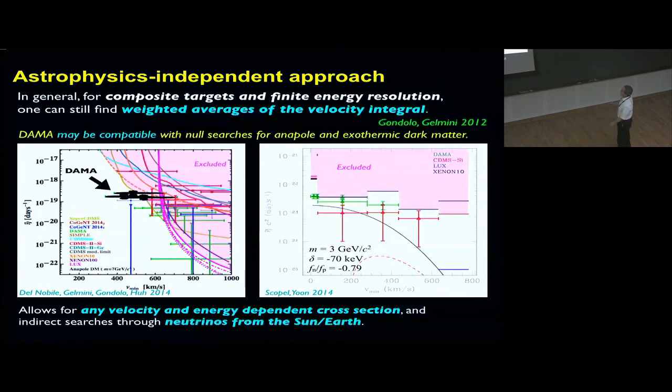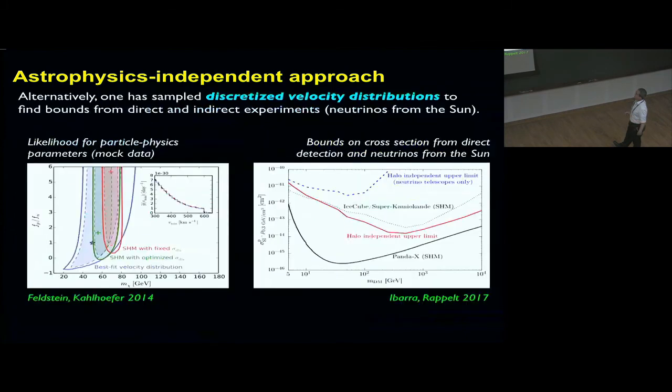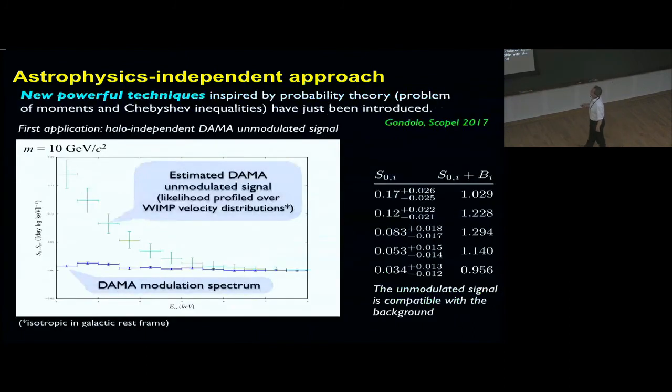Exothermic dark matter is just two particles coexisting in the dark matter. One is a little bit lighter than the other, 70 keV mass difference, and they have a mass of 3 GeV. These methods allow for any velocity or energy dependent cross section, and are also being used for neutrinos from the sun and the earth. Alternatively, one has sampled discretized velocity distributions to find some bounds. But the most recent event has been the introduction of new powerful techniques by myself and Stefano Scopel this year, inspired by probability theory, the problem of moments and Chebyshev inequalities. These methods are very powerful.